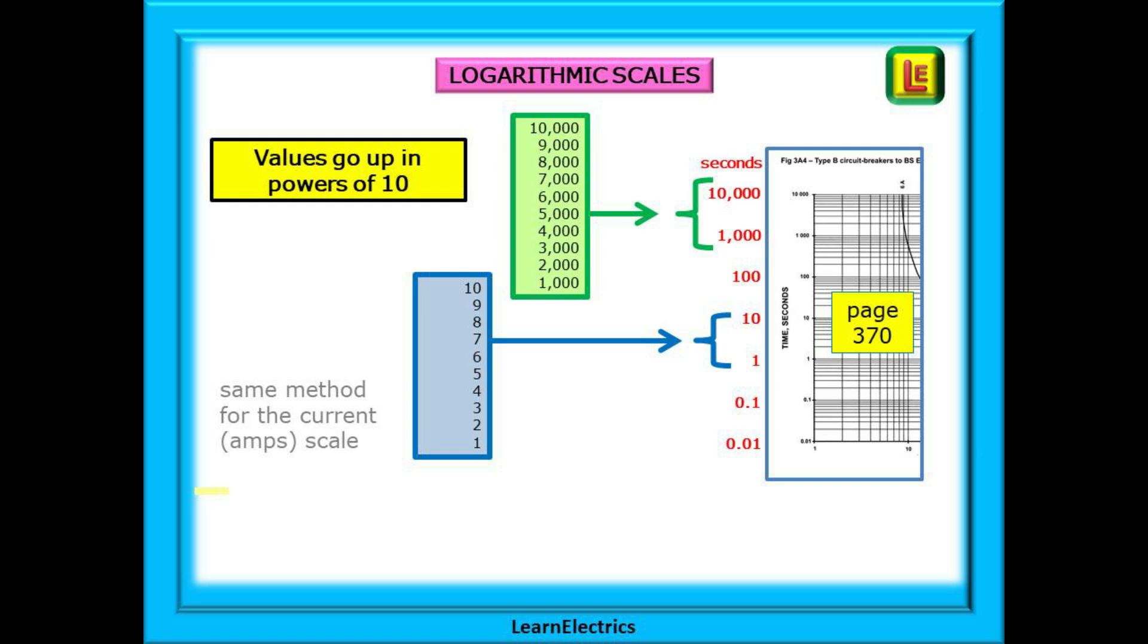The green box shows the seconds in groups of thousands: 1,000 seconds, 2,000 seconds, etc. Or look at the tens: 10, 20, 30, 40 and so on. And the same rule applies to the currents on the bottom of the graph - logarithmic scales.